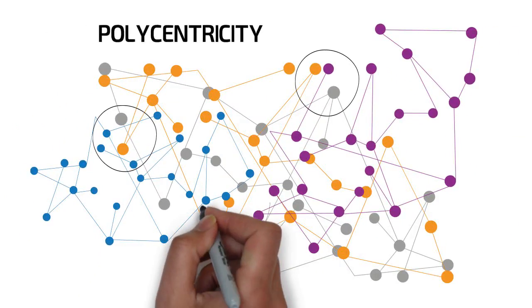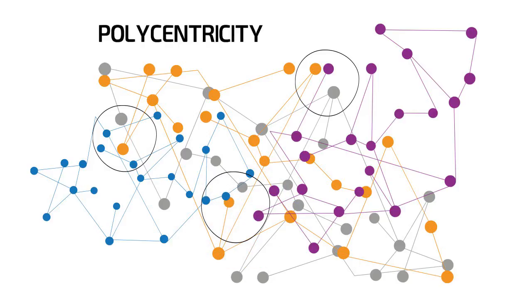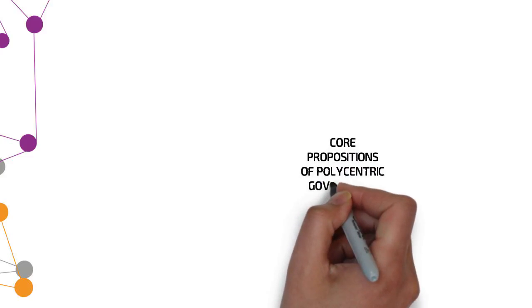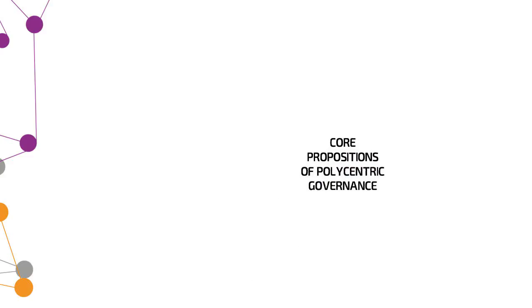Researchers in the European Cost Action Network, INNOGOV, Innovations in Climate Governance, have identified five core propositions of polycentric governance thinking, which they critically explore.